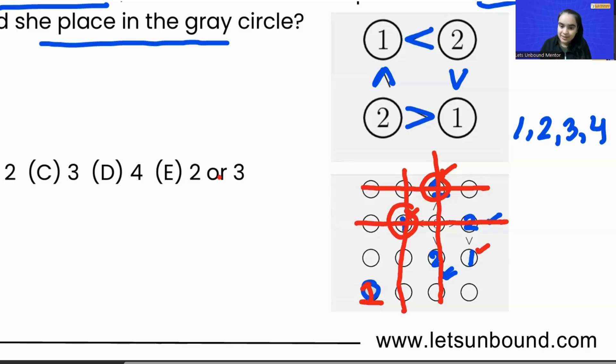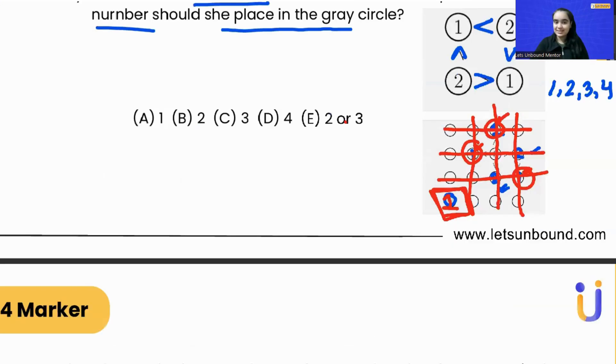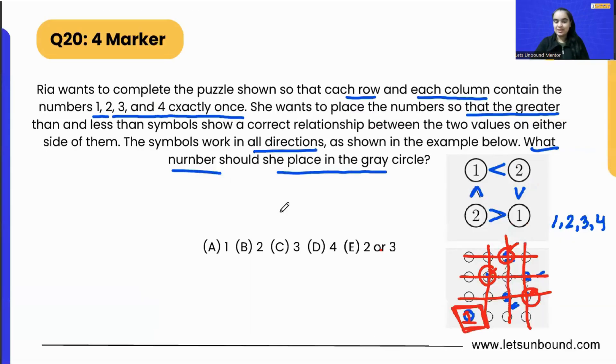If we look at this 1, we cannot have any of the 1s in this row and in this column. And if we check this 1, so we cannot have any of the 1s in this position wherein we can fit 1, which is that gray circle. And we are done - that is our correct answer. So we got our answer: that is option A, 1. Ta-da, done!